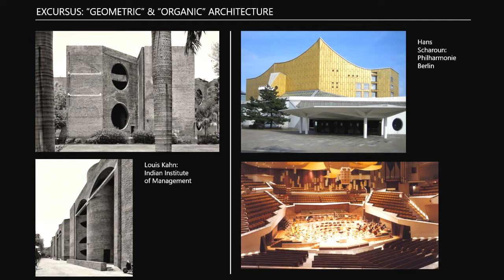On the right side is a famous example of what they call organic architecture. The architect most linked with that in a successful way - not just cute countryside houses - is Hans Scharoun. You see his name on the right side. Frank Lloyd Wright also built houses sometimes linked with that name. And you see Gaudí on this slide before - the church was from Gaudí, who also said architecture should be like nature and organized.